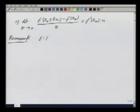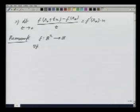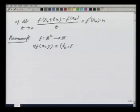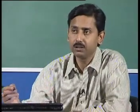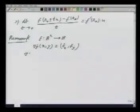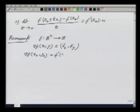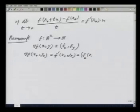Let f be from R² to R. We define the gradient of f at the point (x, y) as grad f = (f_x at (x,y), f_y at (x,y)). It is a vector, and we know that if f is differentiable, this gradient gives us the derivative. So grad f at (x naught, y naught) is equal to f prime at the point (x naught, y naught), which is given by (f_x at x naught y naught, f_y at x naught y naught).